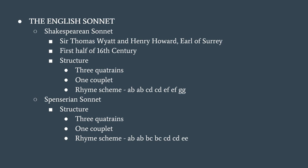This form was so splendidly used by Shakespeare that it is known as the Shakespearean sonnet. Edmund Spenser retained the Shakespearean pattern with a little modification. Where the three quatrains in the Shakespearean sonnet had no internal connecting rhyme, Spenser interconnected them by the rhyme scheme: ABAB BCBC CDCD EE.